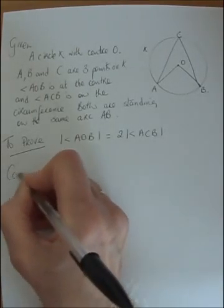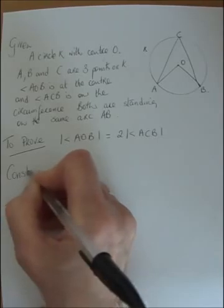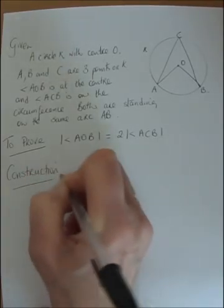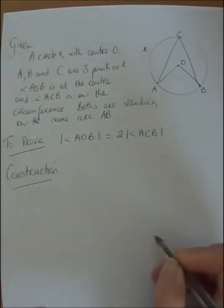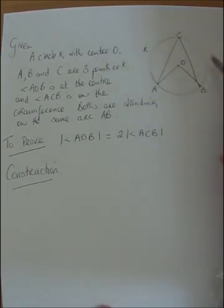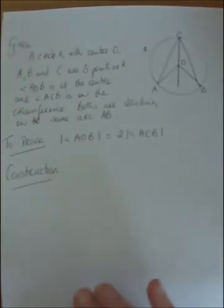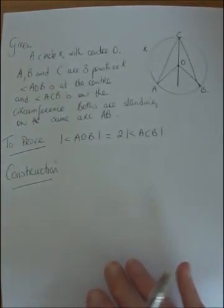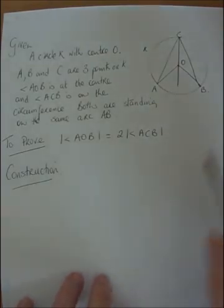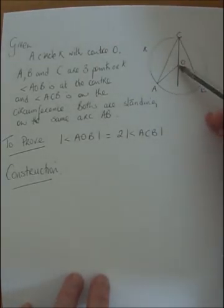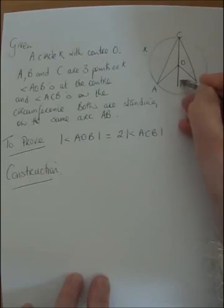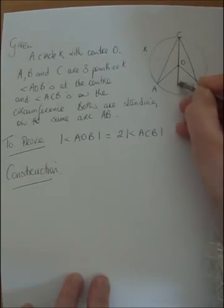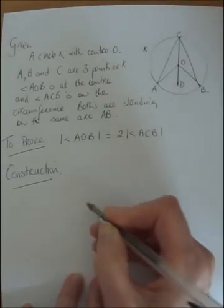Now I have a construction in this proof, and the construction I need to draw is to divide this into two isosceles triangles. So I've drawn a line from C through to O and produced it out to a point which I'm calling D.